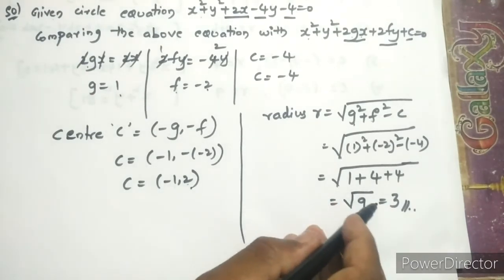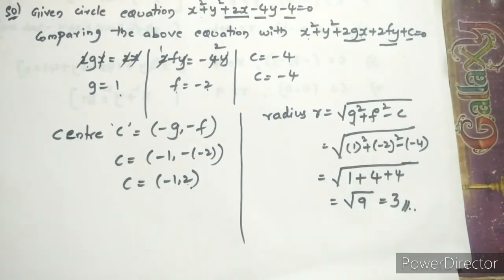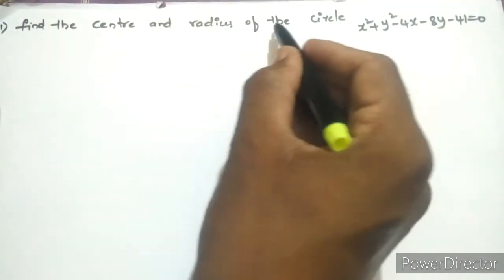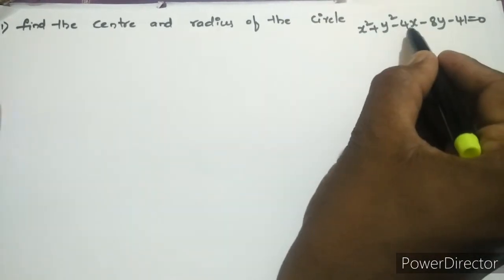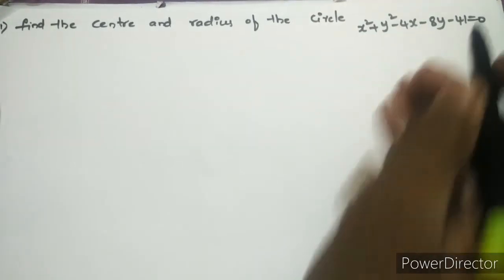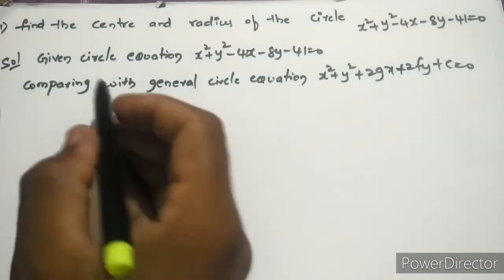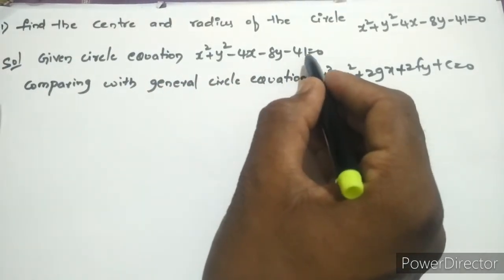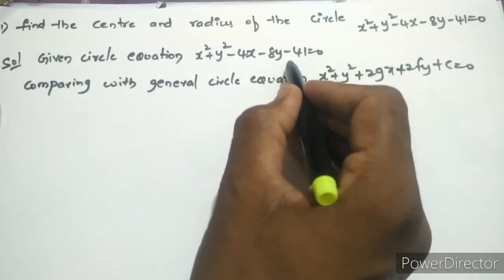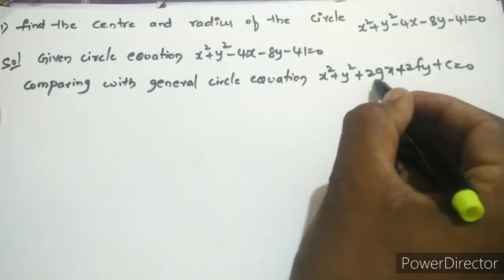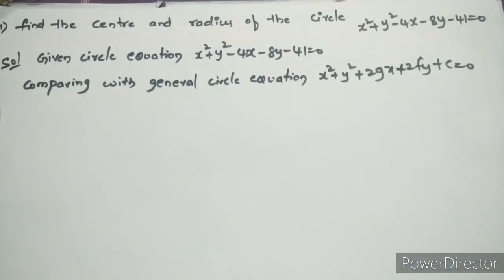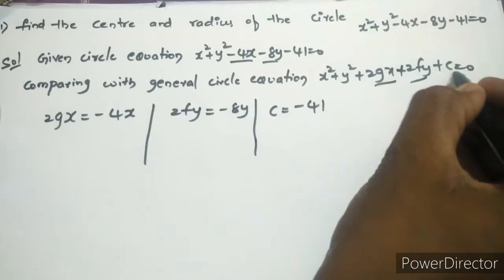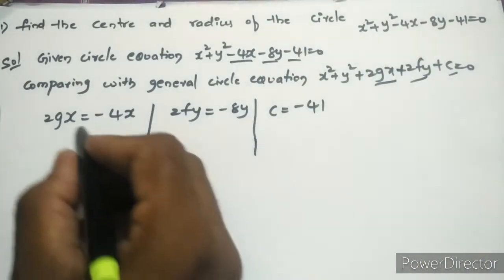The center is (-1, 2) and the radius r = 3. Now see the next problem: find the center and radius of the circle x² + y² - 4x - 8y - 41 = 0. Comparing with the general equation x² + y² + 2gx + 2fy + c = 0: 2gx = -4x and 2fy = -8y.